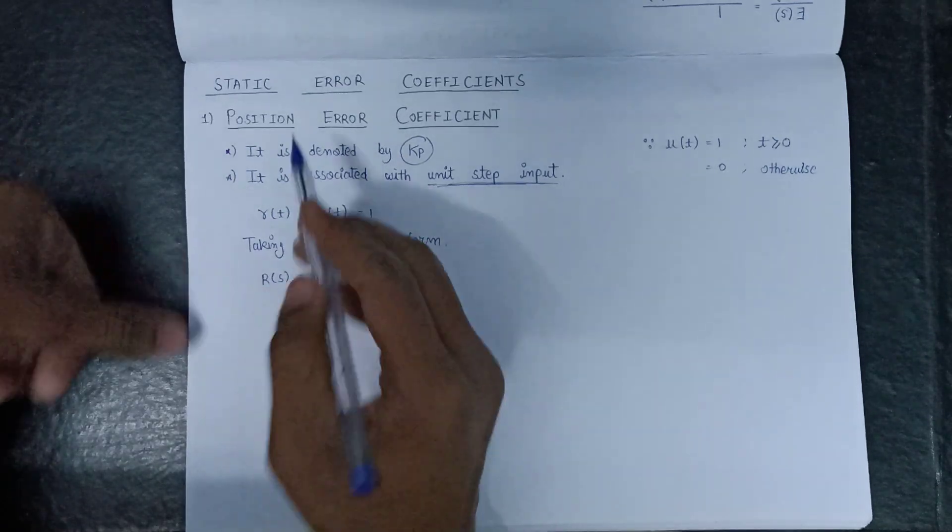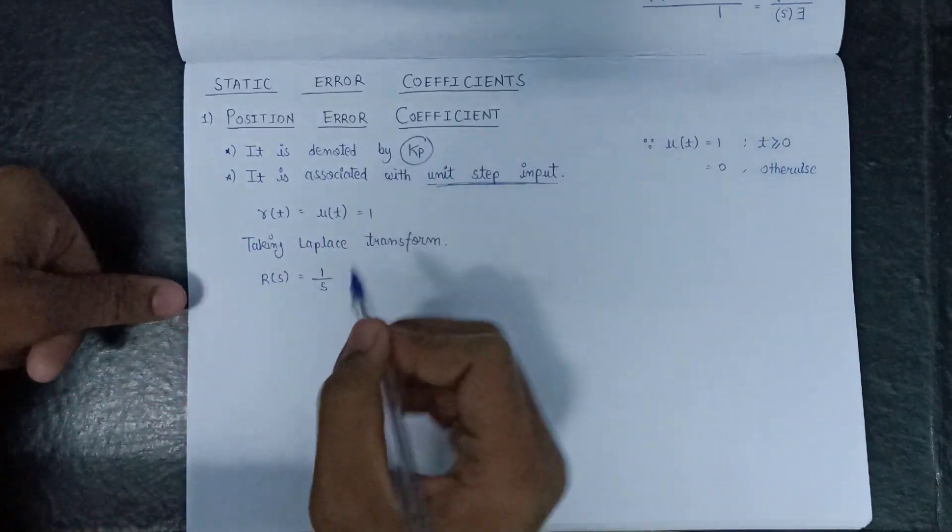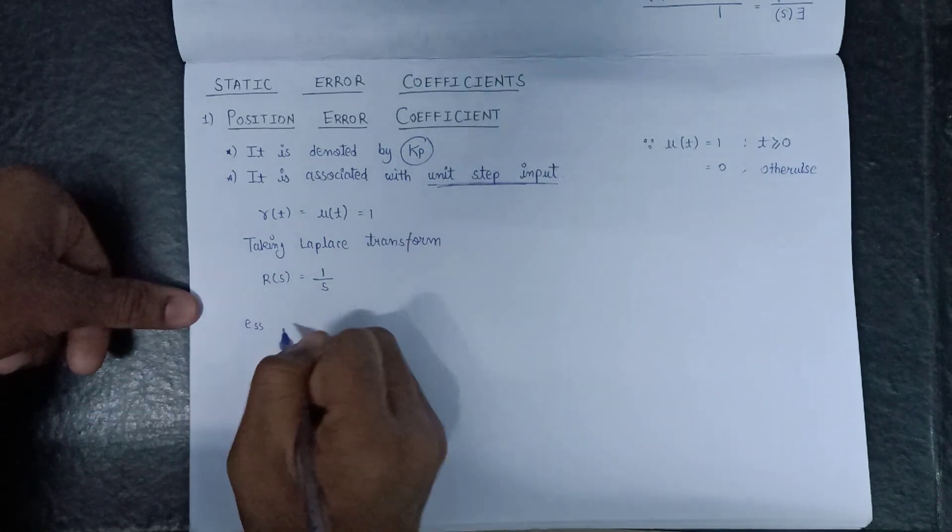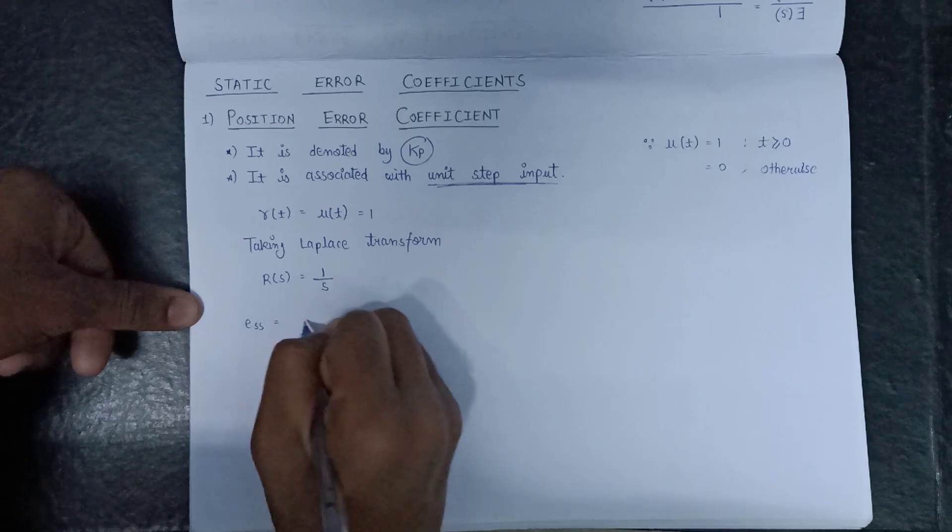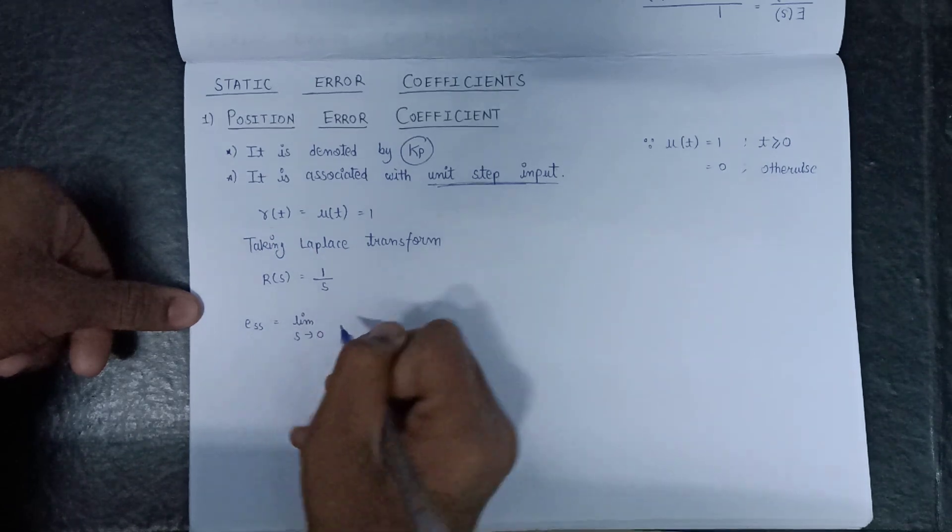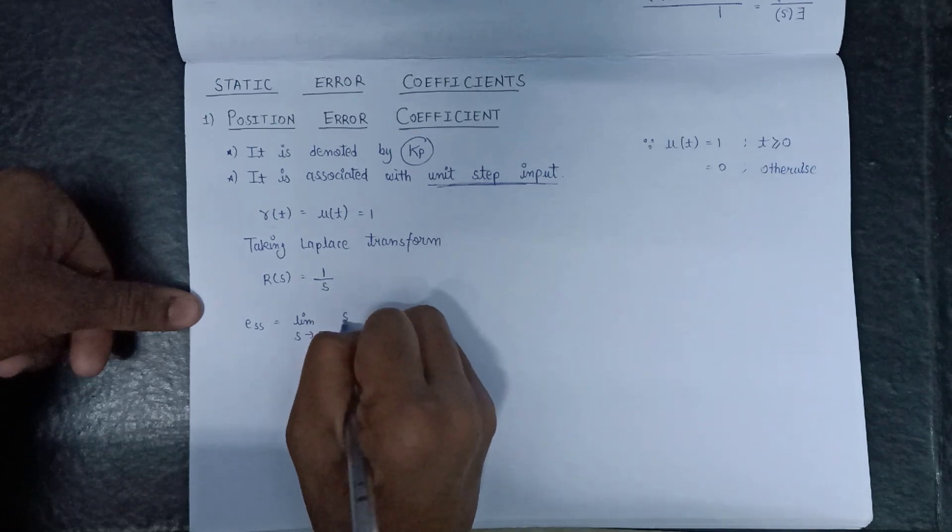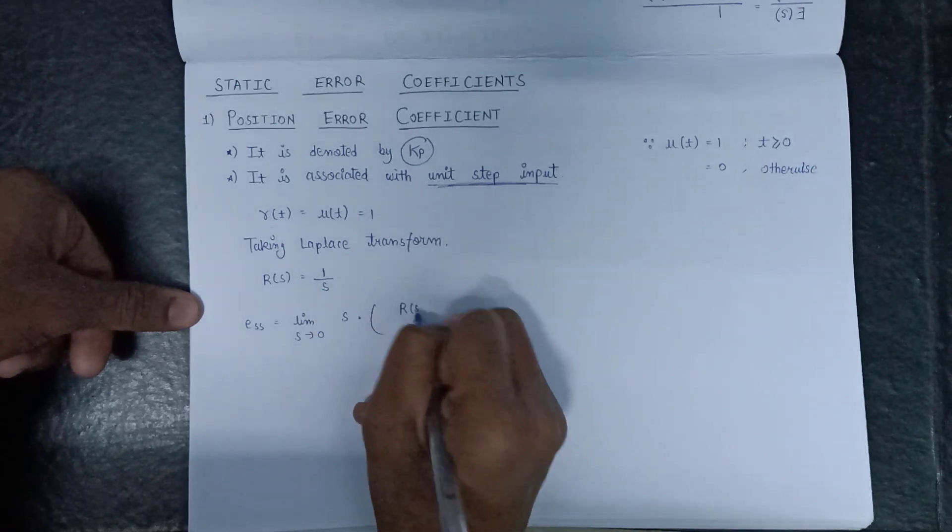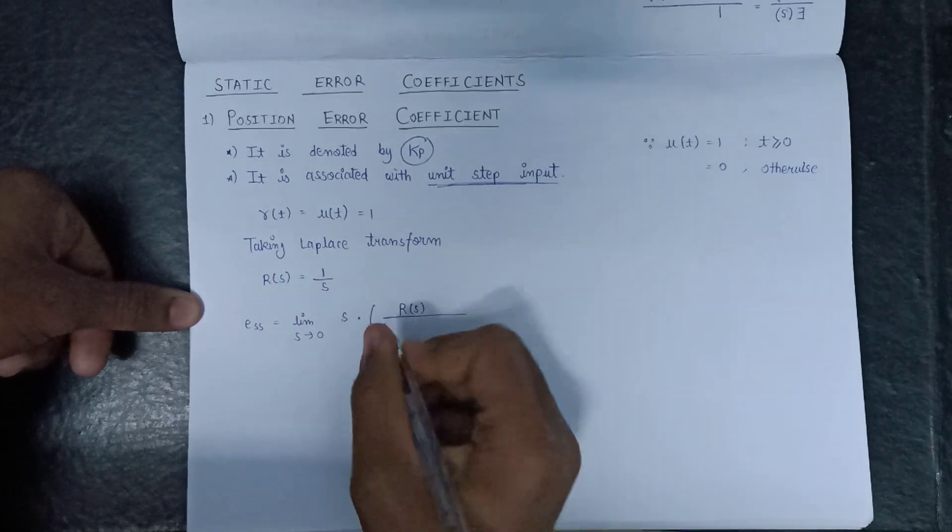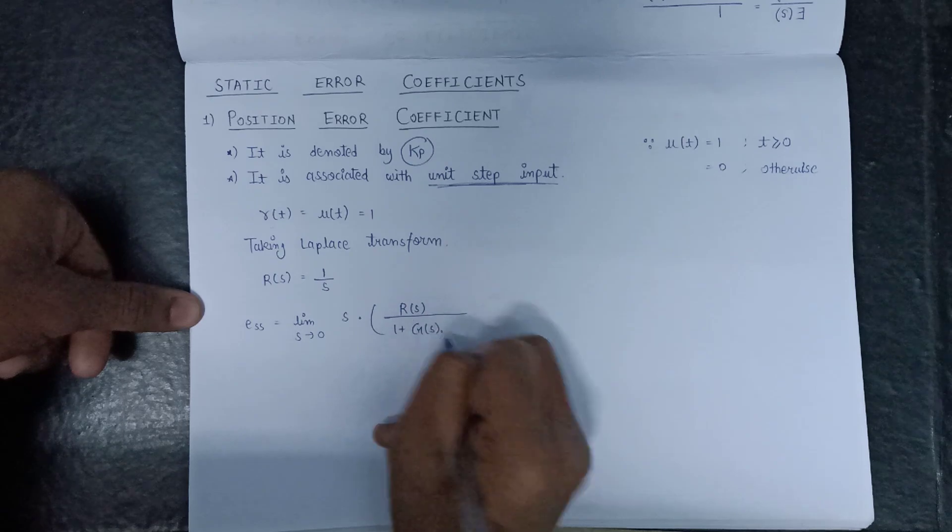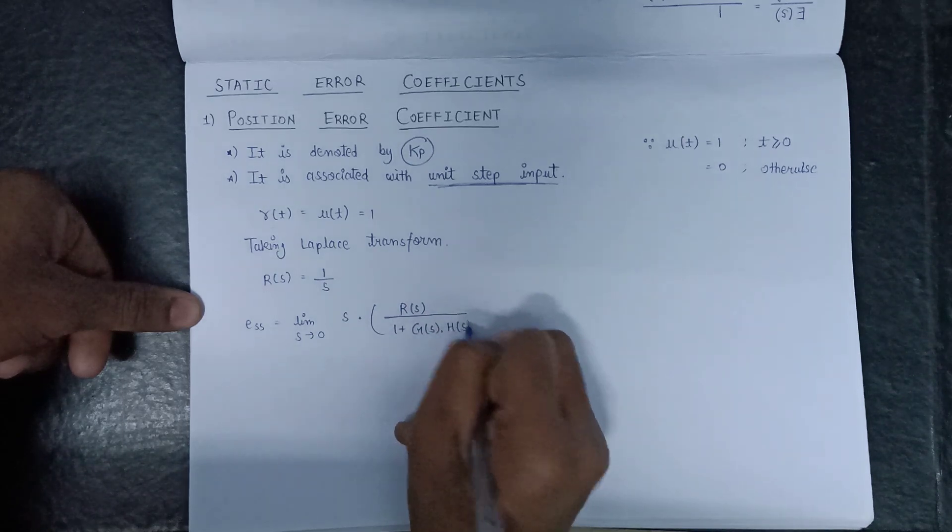Since in the previous lecture of static error coefficient, we have derived a term E(s) is nothing but equal to limit s tends to 0, s into R(s) over 1 plus G(s) into H(s).